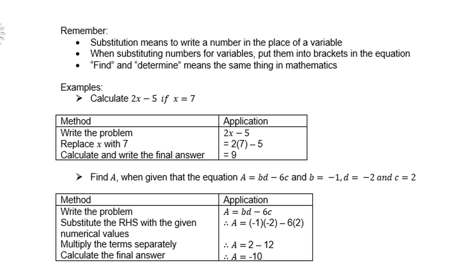Find A when given that equation A equals BD minus 6C, and B is negative 1, D is negative 2, and C is 2. Again, use brackets when you do your substitution, that is advisable. Then you can either use a calculator or do it mentally. Negative 1 times negative 2 is positive 2, negative 6 times 2 is negative 12. Therefore the answer is negative 10.